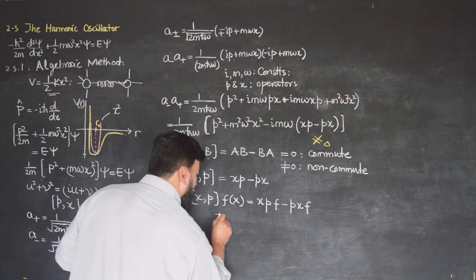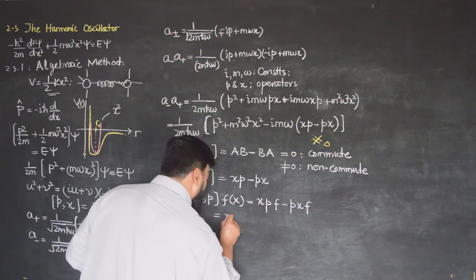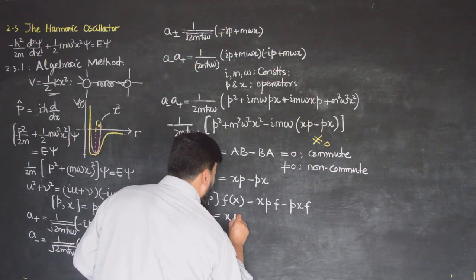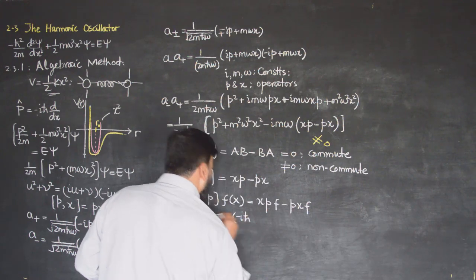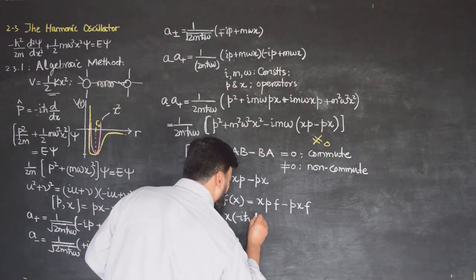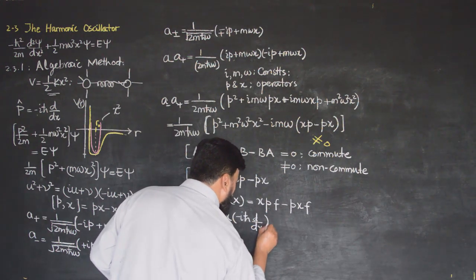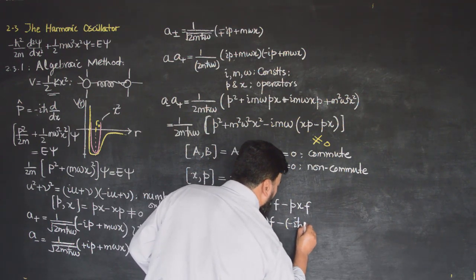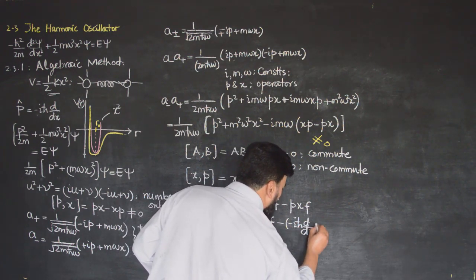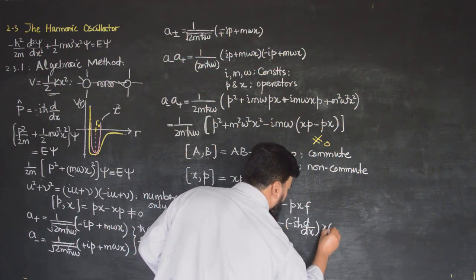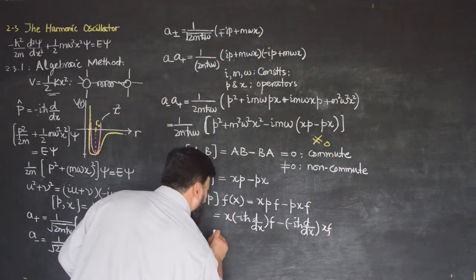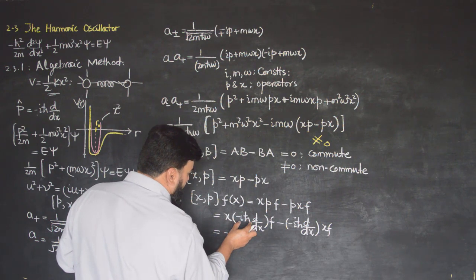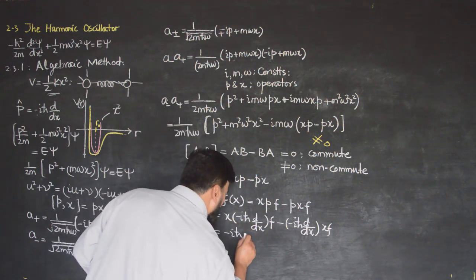This is equal to x times the p operator, which is −iℏ d/dx, applied to f, minus (−iℏ d/dx) applied to x·f. Now this term gives −iℏ times x times df/dx, since the constant comes out.